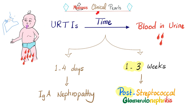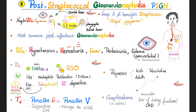There are two nephritic syndrome diseases where a kid develops an upper respiratory tract infection and then later develops blood in the urine. The key question is: how long did it take? If it took 1-3 days, this is IgA nephropathy. If it took 1-3 weeks, this is post-streptococcal glomerulonephritis. The reason it's called 'post' is because of that delayed 1-3 week interval after pharyngitis or skin infection before nephritic syndrome develops.